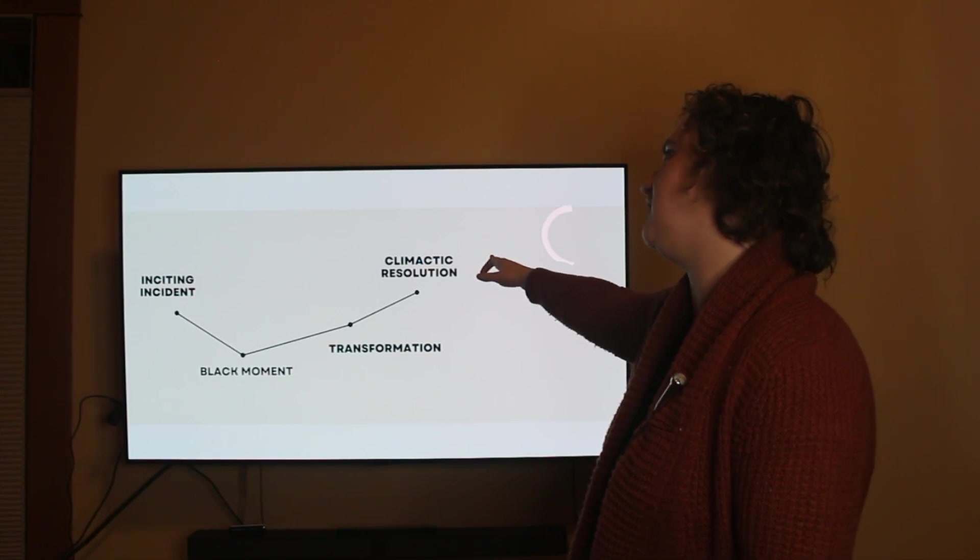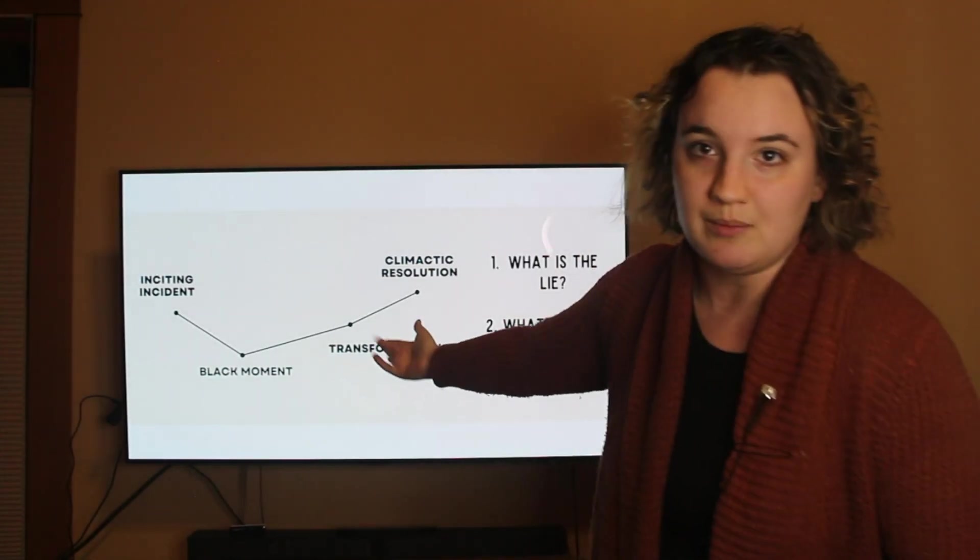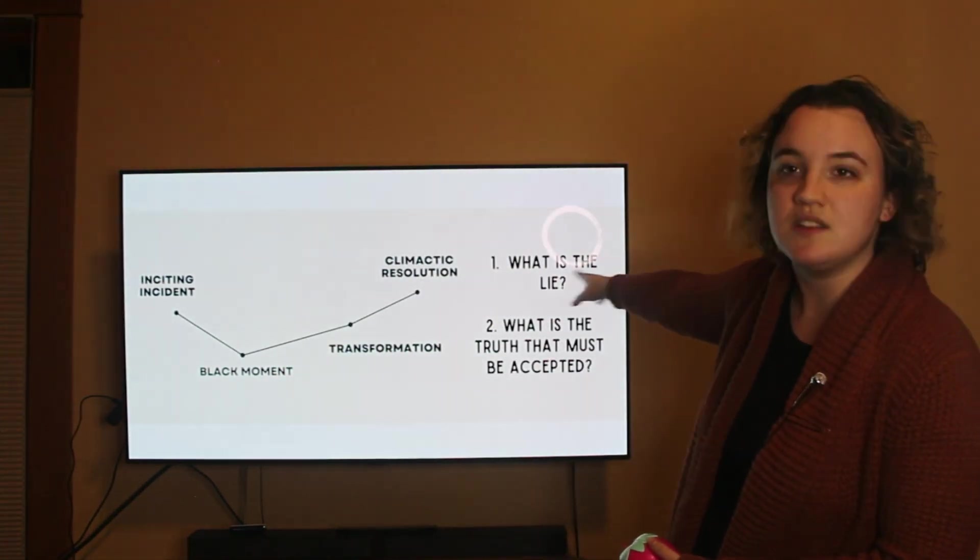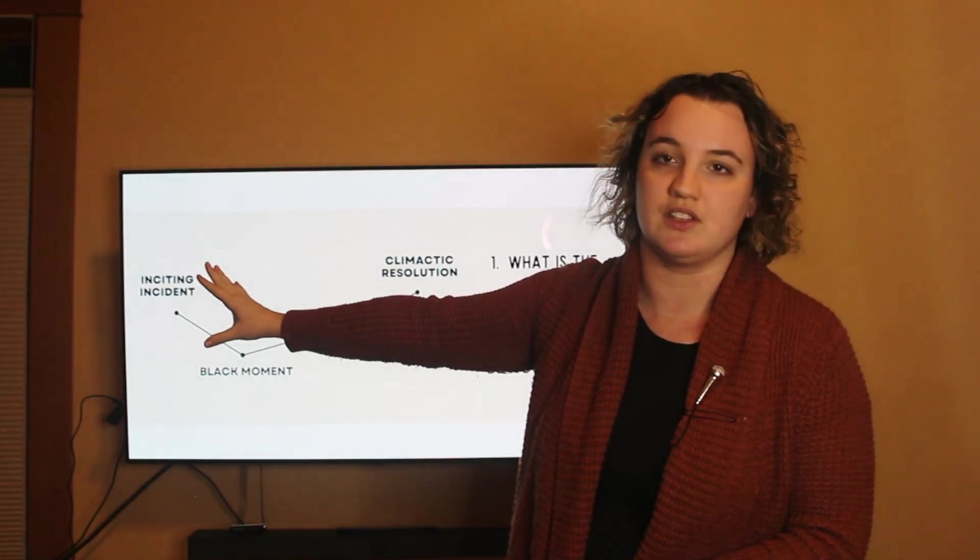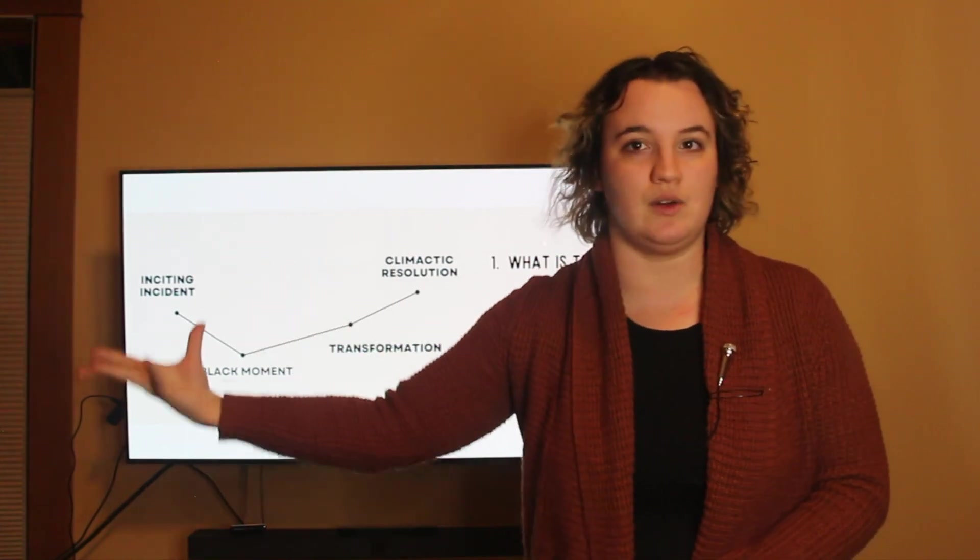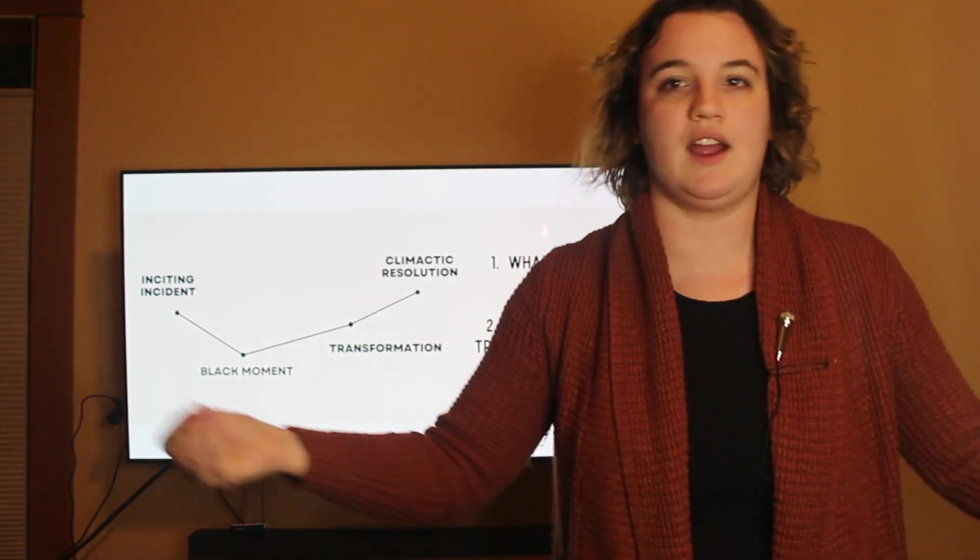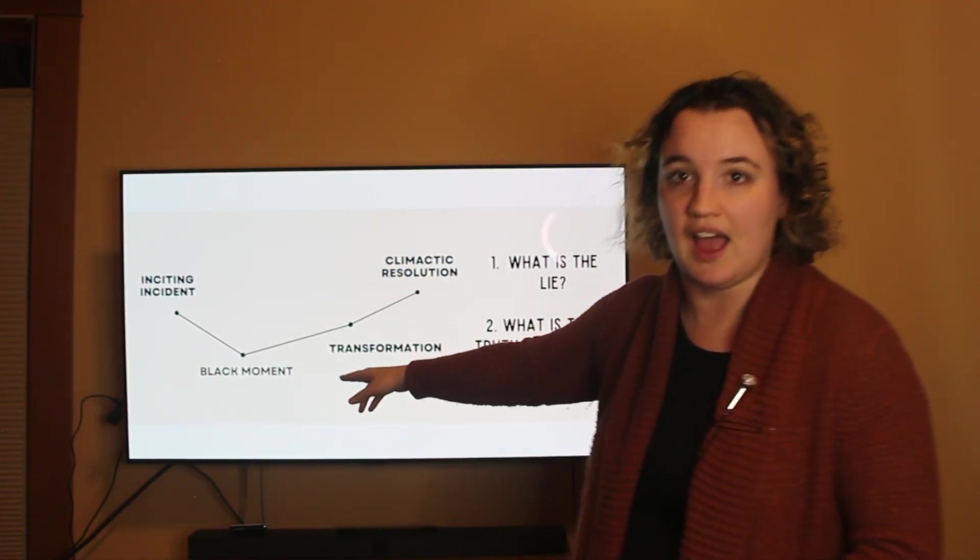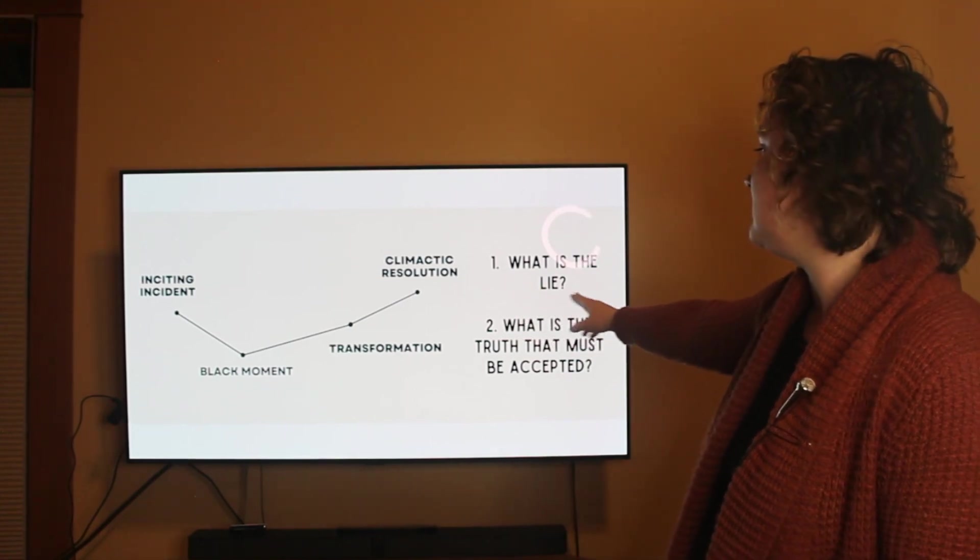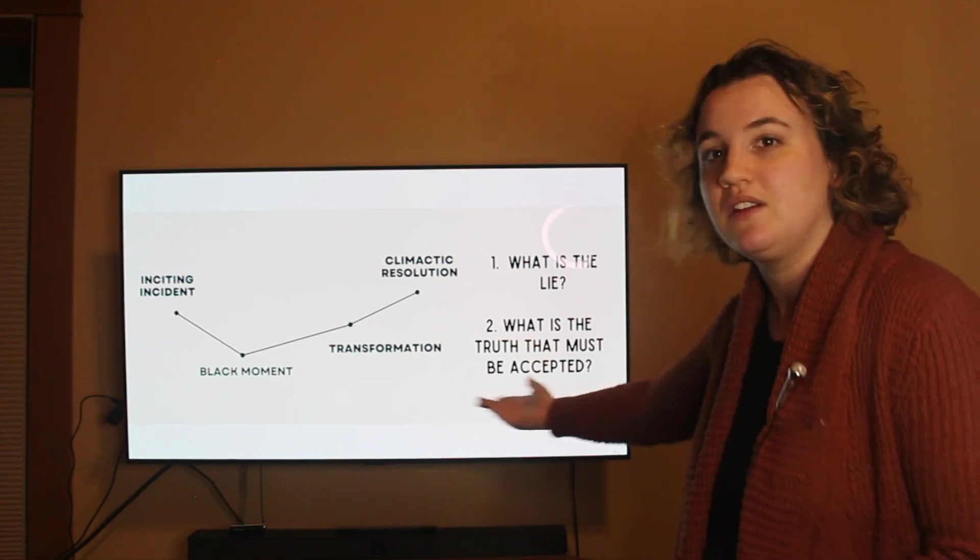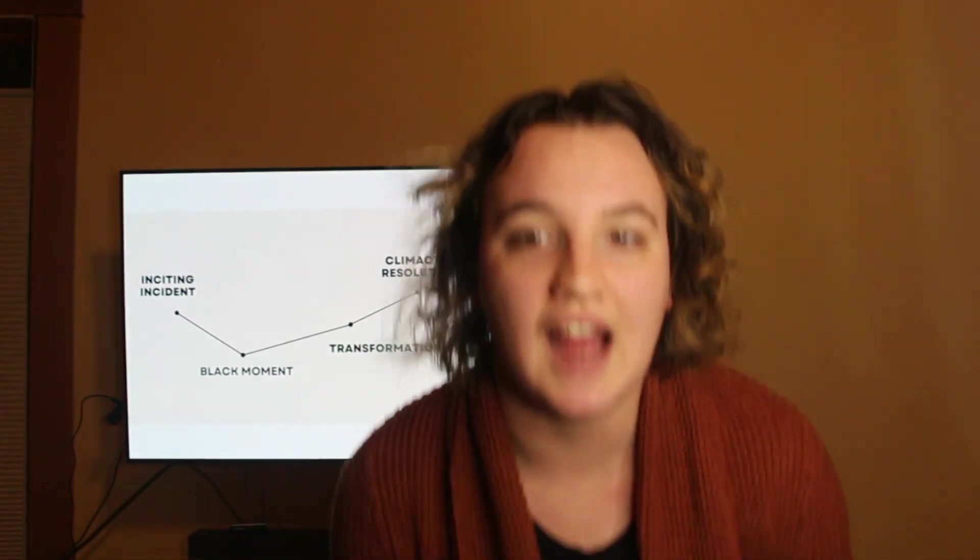So then you have your transformation and your climactic resolution. Another way that people will identify this midpoint moment is by saying, what is the lie that the character believes in the beginning of the story in the ordinary world? They have a lie that they are acting out of. It's how they interact with the world based on a lie. They have to hit this black moment to realize that their lie is a lie. And then to say, okay, well, if that's a lie, what is the truth then that I have to accept? Guys, this is what I went through. This was my 2023. Get out of here. I'm so happy.